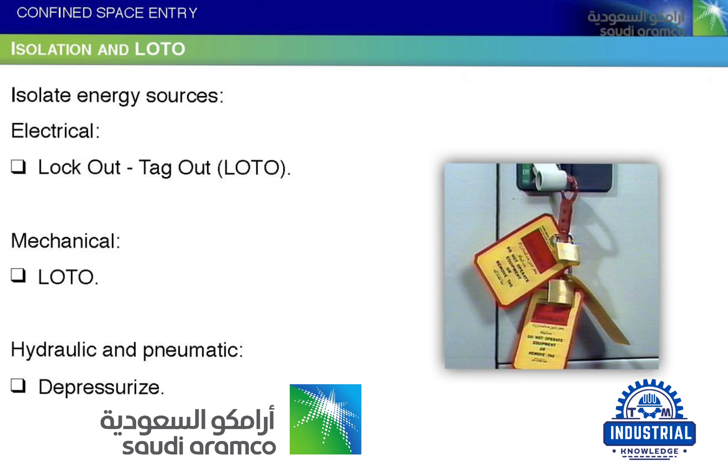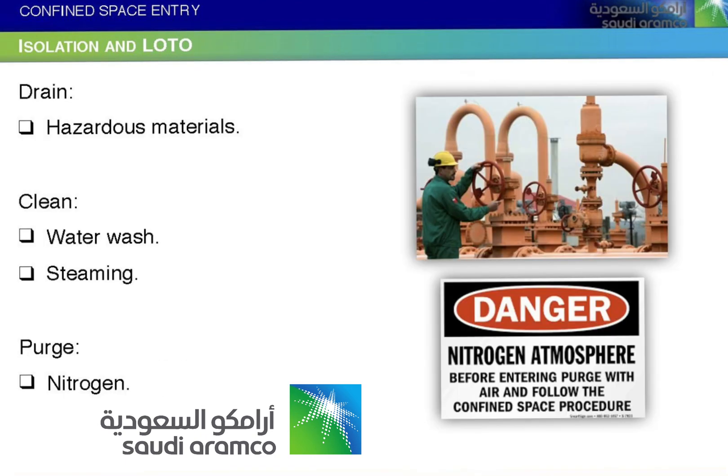Energy source isolation categories: Electrical — lockout, tagout (LOTO). Mechanical — LOTO. Hydraulic and pneumatic — depressurize and drain. Hazardous materials — clean, water wash, steaming, purge, or nitrogen purge.